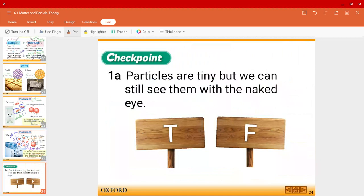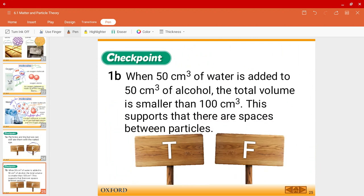So, let's do some checkpoint questions. Question 1A. Particles are tiny, but we can still see them with our naked eye. Is that true? Of course not. That is false. We cannot see particles with our naked eye. Let's see. Question B. When 50 cm3 of water is added to 50 cm3 of alcohol, the total volume is smaller than 100 cm3. Yes, this part is true. This supports that there are spaces between particles. Yes, that is true.